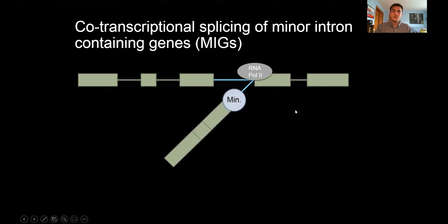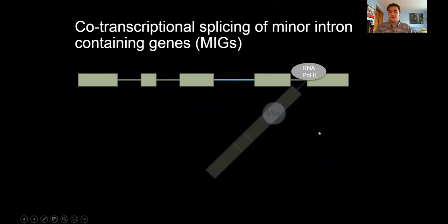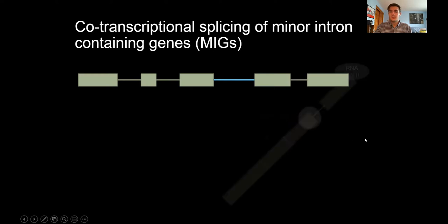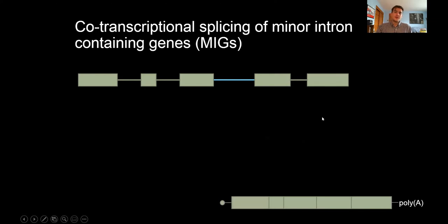As transcription continues, the minor spliceosome will remove this minor intron. But again, it cannot recognize this downstream major intron, so it dissociates. The major spliceosome assembles, and as transcription is finished, the major spliceosome removes this last major intron. Polymerase 2 and major spliceosome dissociate, and this RNA is capped and polyadenylated for nuclear export. This demonstrates how coordinated, both in time and space, the co-transcriptional splicing of MIGs must be for proper splicing.